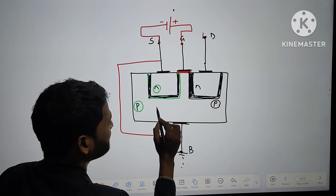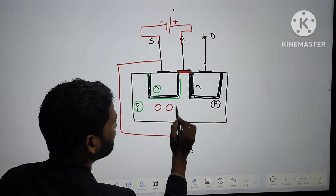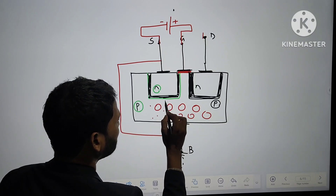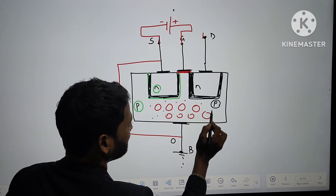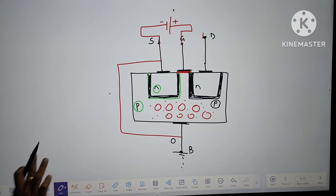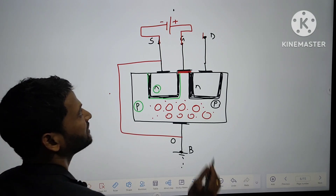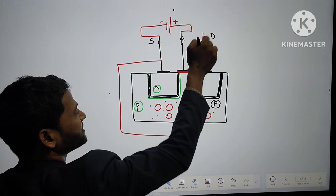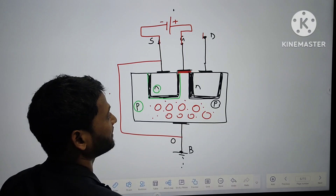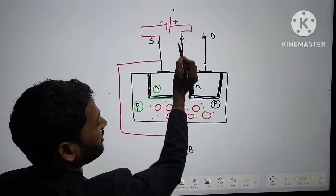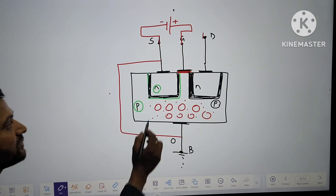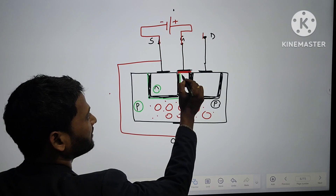In the P-type semiconductor, the majority charge carrier is holes. The minority carriers are electrons. Due to the impact of the positive charge supply at the gate, electrons will be attracted toward the gate. But electrons cannot cross the insulating material, so they accumulate beneath the oxide layer.